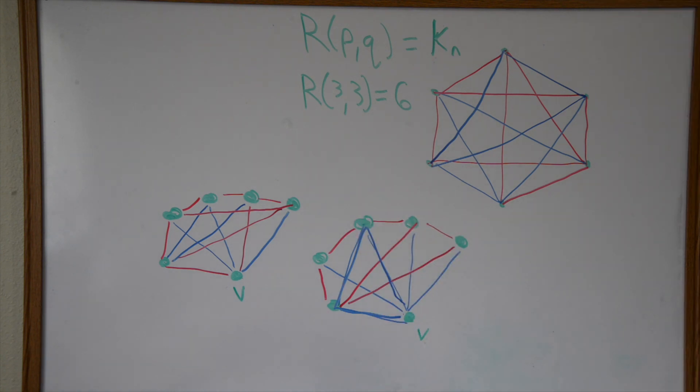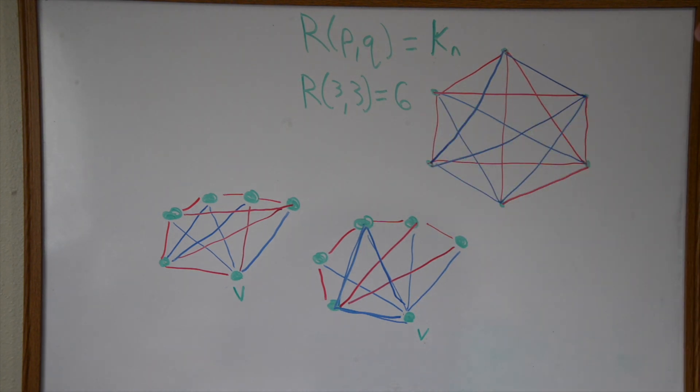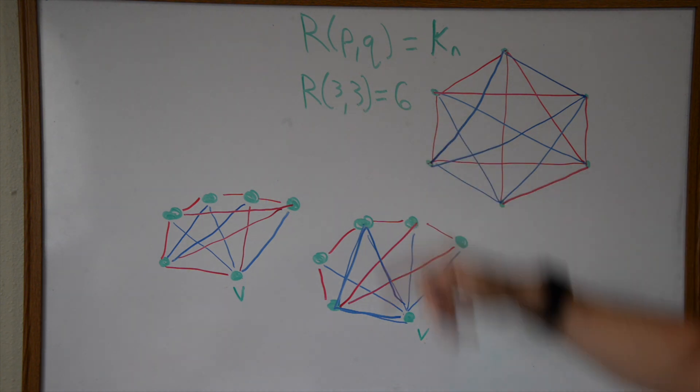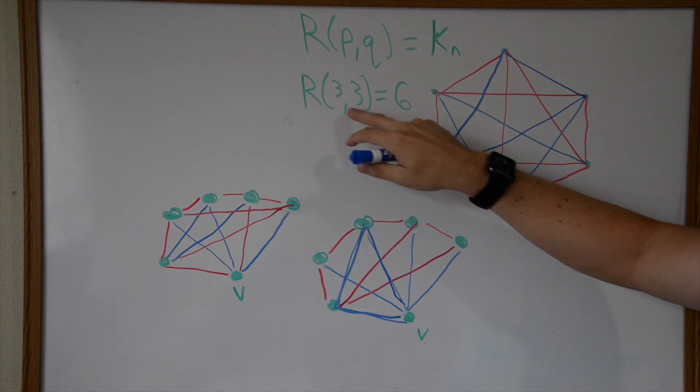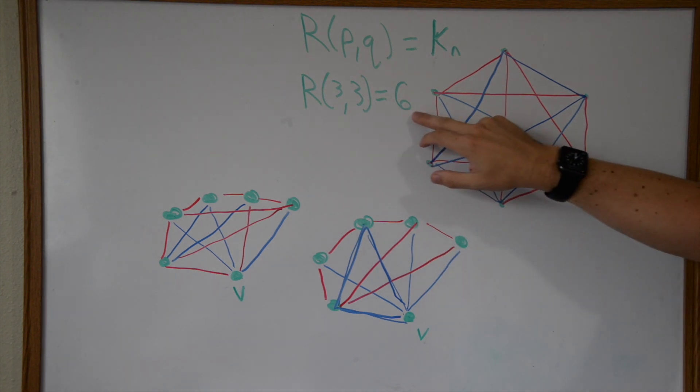This gets a lot more complicated when we're talking about different types of complete graphs we want to make. The proof process gets a little more challenging when p and q are not the same number, and when these numbers begin to get very large, let's say like five and six and higher.